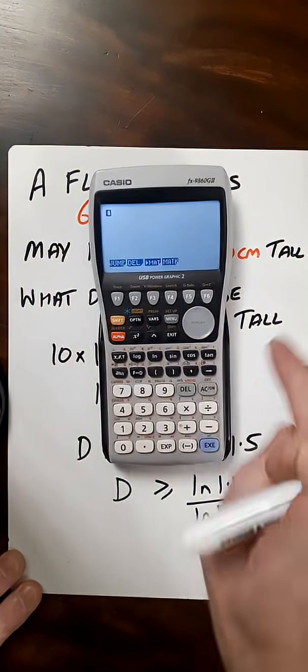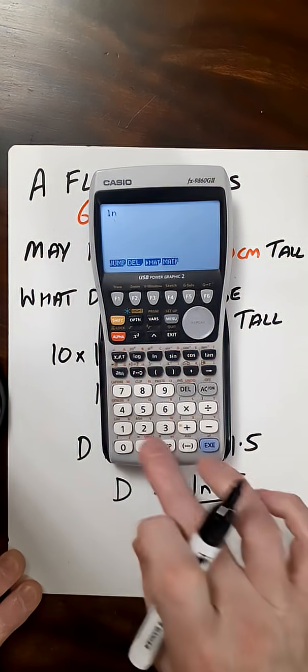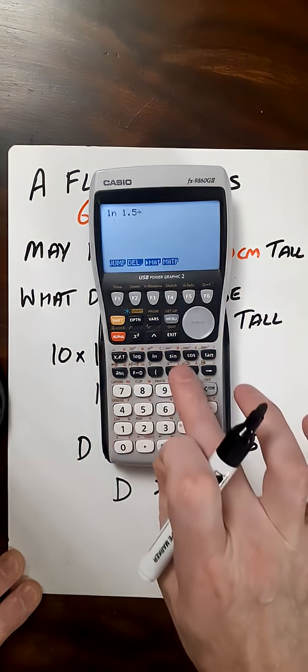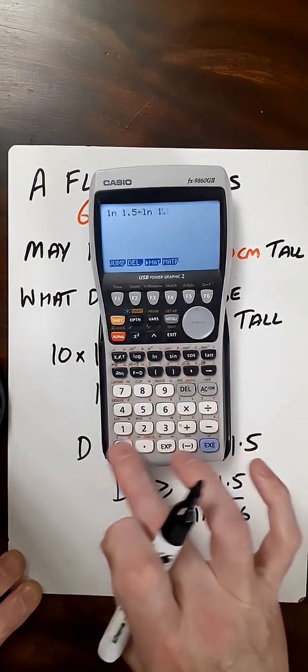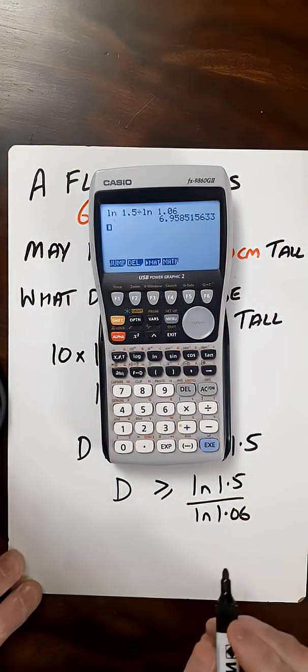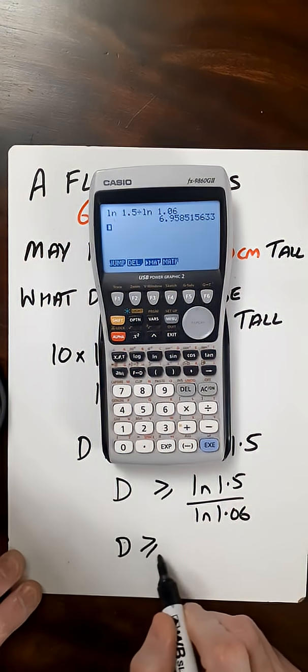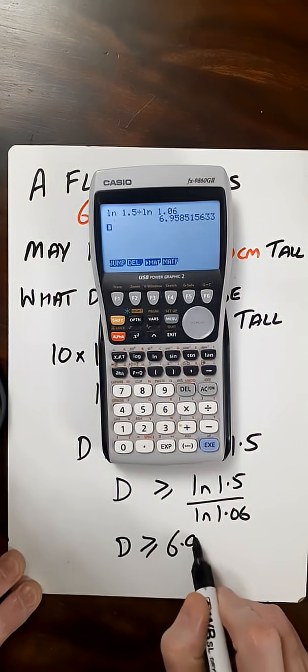Let's work out what this is. Let's put it into a calculator. So natural log of 1.5 divided by natural log of 1.06. That gives us 6.95. So D has to be greater than or equal to 6.95.